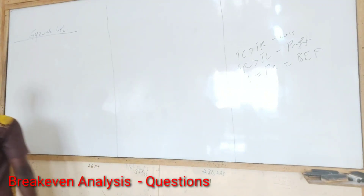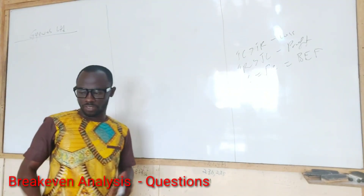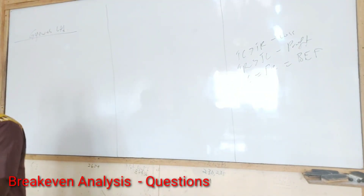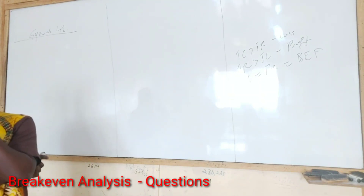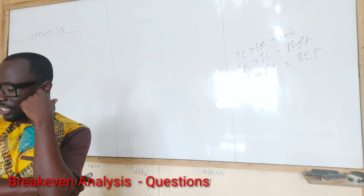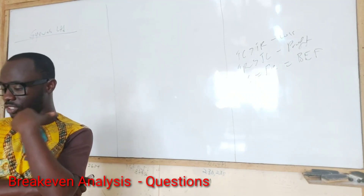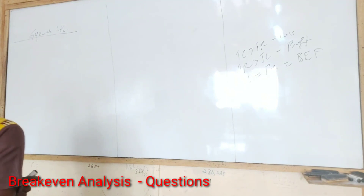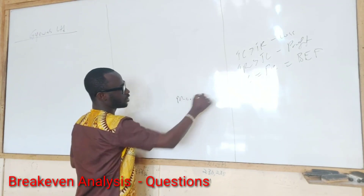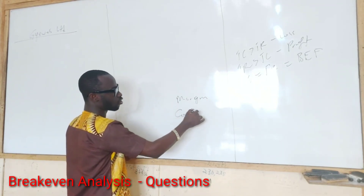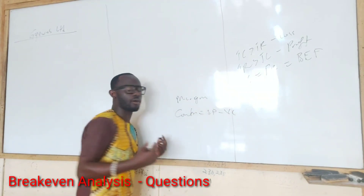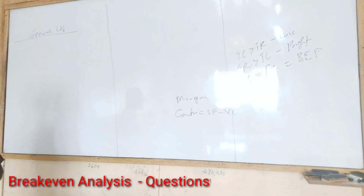Let's now look at our question on break-even. Part A, for six months, you should calculate the break-even point in units and in value. Part B, calculate the units for the targeted profit. Part C, calculate the margin of safety. When doing break-even analysis, you are using the marginal costing approach, which means you are interested in contribution. Contribution is your selling price minus variable cost.